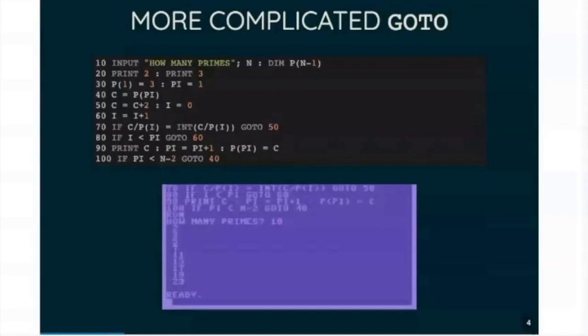Now, this program has three go to's in it. They all jump to different places. And it's a mess. It's a very simple algorithm. It basically has three nested loops in it, but nobody's going to follow that easily.